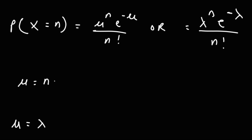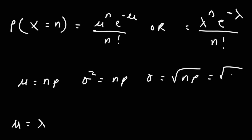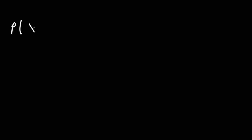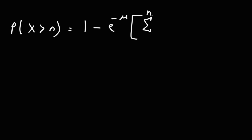The mean is also equal to n times P. The variance is also equal to n times P, and the standard deviation is the square root of n times P, which is also the square root of lambda. The probability for the Poisson distribution that x is greater than n is equal to 1 minus e to the negative mu, times the summation from x equals 0 to n of mu to the x over x factorial.